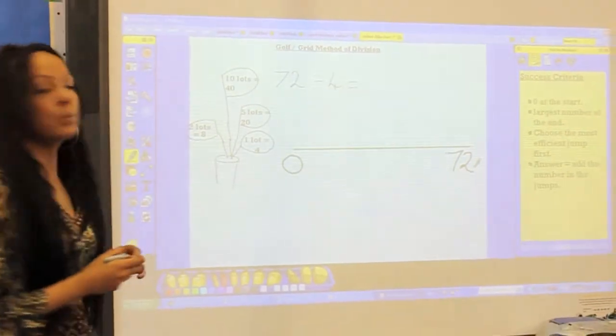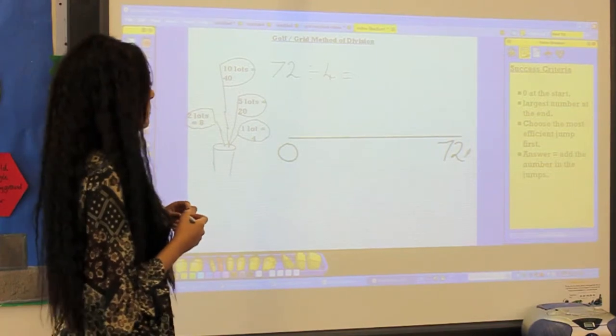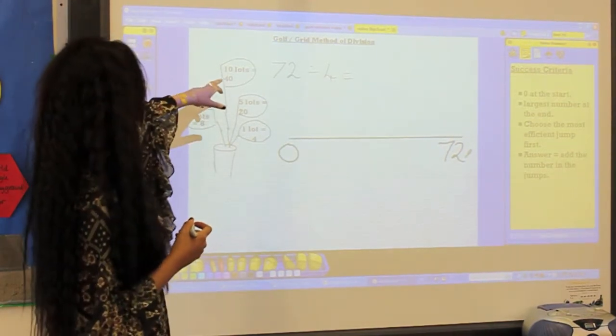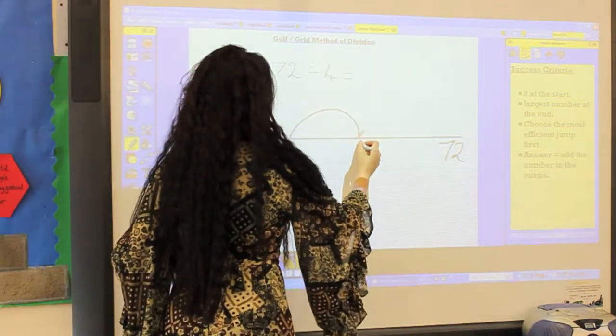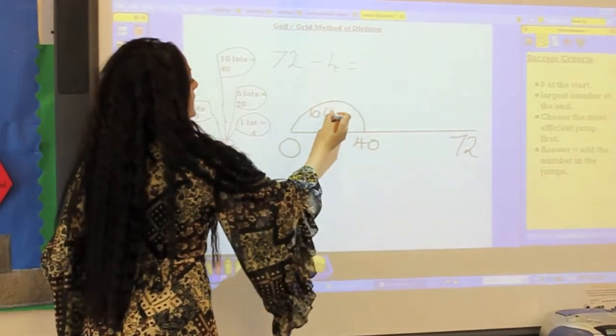And then what you do is you choose the golf club that you'd like to use to jump up the number line. So the most efficient would be ten lots of four, which would be a jump to 40. And within your jump, if you write ten lots just so you can keep a record.